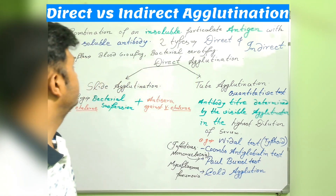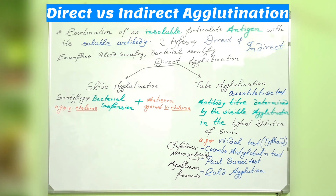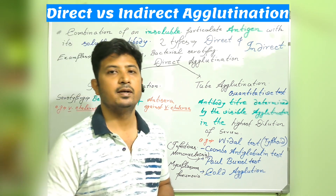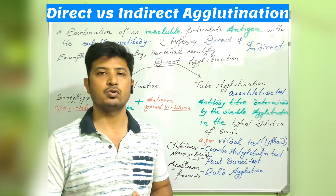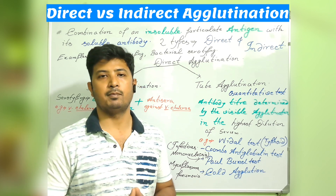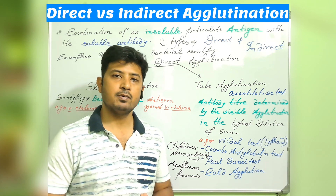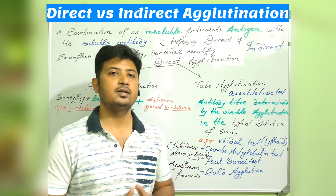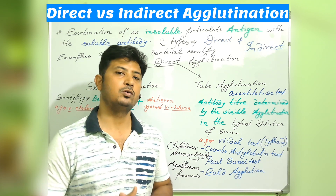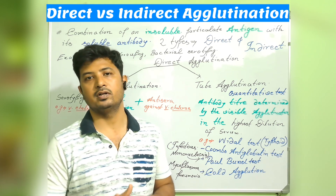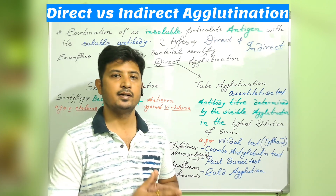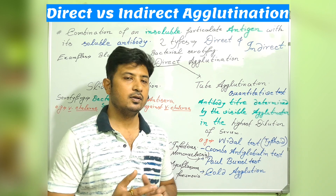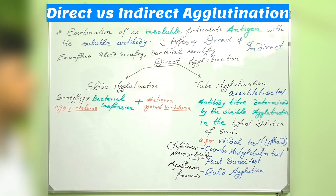Agglutination is the combination of an insoluble particulate antigen with its soluble antibody. The antigen is in insoluble form and the antibody is in soluble form, which will form a visible clump observable through naked eyes. This agglutination process is most commonly employed in several immunological tests for different diseases. Agglutination is of two types: direct and indirect.